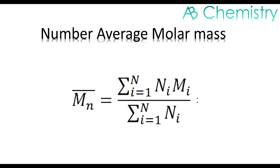Here the number average molar mass is the main thing. The equation for the number average molar mass is: Mn is equal to sigma ni·Mi divided by sigma ni.